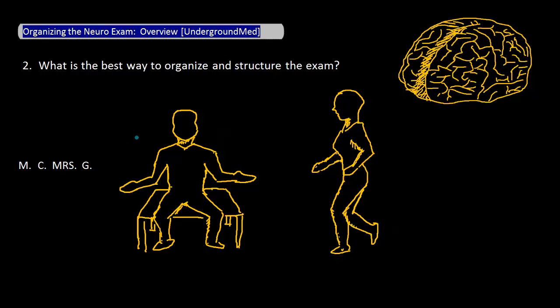Since the coordination test, such as the finger-to-nose test, or the finger tapping test, can be done with the patient still sitting in front of you, do these first. Then, finally, have the patient stand up, and assess her gait. With that, you have covered all six major pieces of the neurological exam.